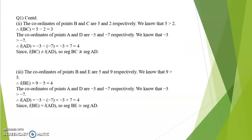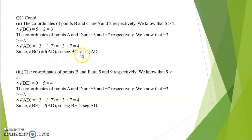Next, we find length BC and length AD. The coordinate of B is 5 and C is 2. Since 5 is greater than 2, length BC is 5 minus 2, which is 3. Coordinates of A is minus 3 and D is minus 7. Since minus 3 is greater than minus 7, length AD is equal to minus 3 minus of minus 7, which is minus 3 plus 7, equal to 4. Since 3 and 4 are not equal, segment BC is not congruent to segment AD.